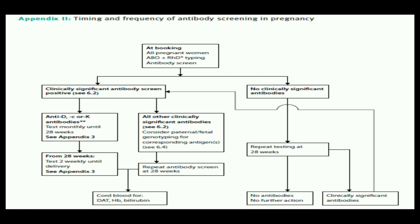At booking, all pregnant women should have ABO plus RhD typing and an antibody screen. If no clinically significant antibodies are present, repeat testing at 28 weeks. At 28 weeks, if no antibodies are found, no further action is needed. However, if clinically significant antibodies are present, we have to follow the left-side route of the pathway.